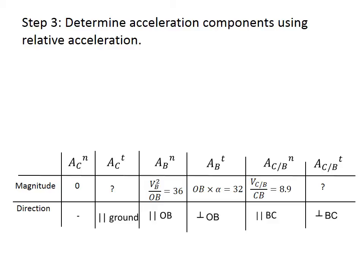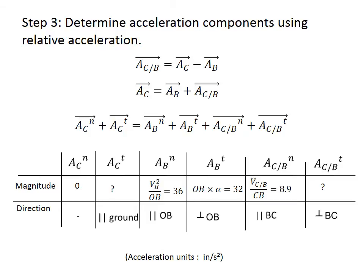The next step is to determine the acceleration components using the relative acceleration theorem. The relative acceleration of point C versus B equals the absolute acceleration of C minus the absolute acceleration of B. If we decompose each of these accelerations into their normal and tangential components, we obtain a vectorial equation where each acceleration — of C, B, and C relative to B — is split into its normal and tangential components.